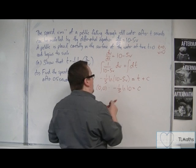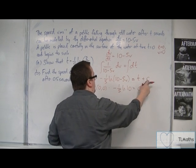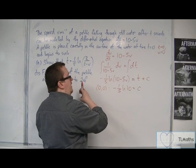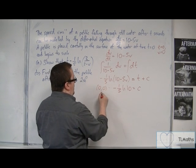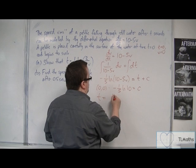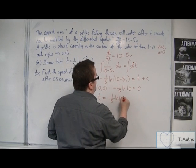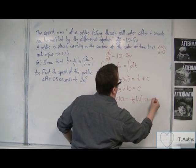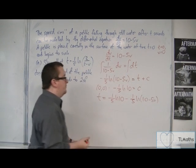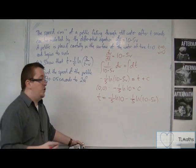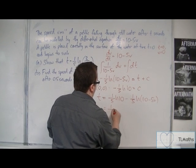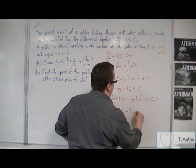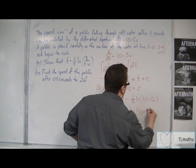So if we add that to both sides, because we've got t minus one-fifth log 10 here, I'm going to add the one-fifth log 10 to both sides. So t equals one-fifth log 10 take away one-fifth log of 10 minus 5v. Now we can factor out the one-fifth and have log 10 take away log of 10 minus 5v.